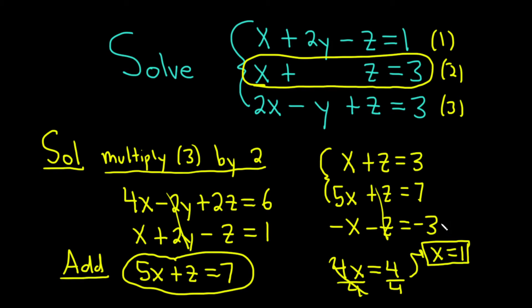So now what you can do is plug this back in to this equation to find z. When we do that, we get 1 plus z equals 3. And then we can subtract 1 from both sides. That's going to give us z equals 2. So now we have x, we have z.